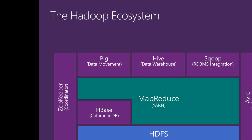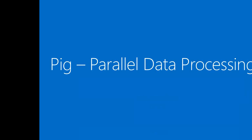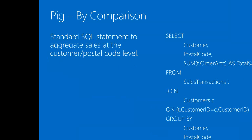Today our focus is going to be on PIG and HIVE. PIG is the parallel data processing tool within the Hadoop ecosystem.